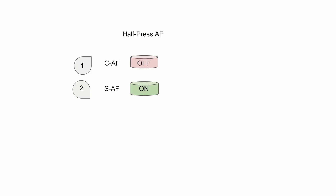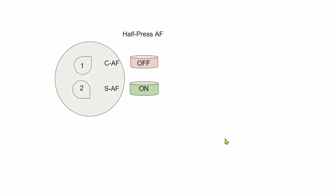The overall logic is: lever position 1 puts the camera in CAF with the half-press disabled; lever position 2 puts it in SAF with the half-press enabled. These settings are independent but intersect on the autofocus mode. It's not directly linked to the shutter button, but you can get the desired behavior because of this intersection. That's how you do it.